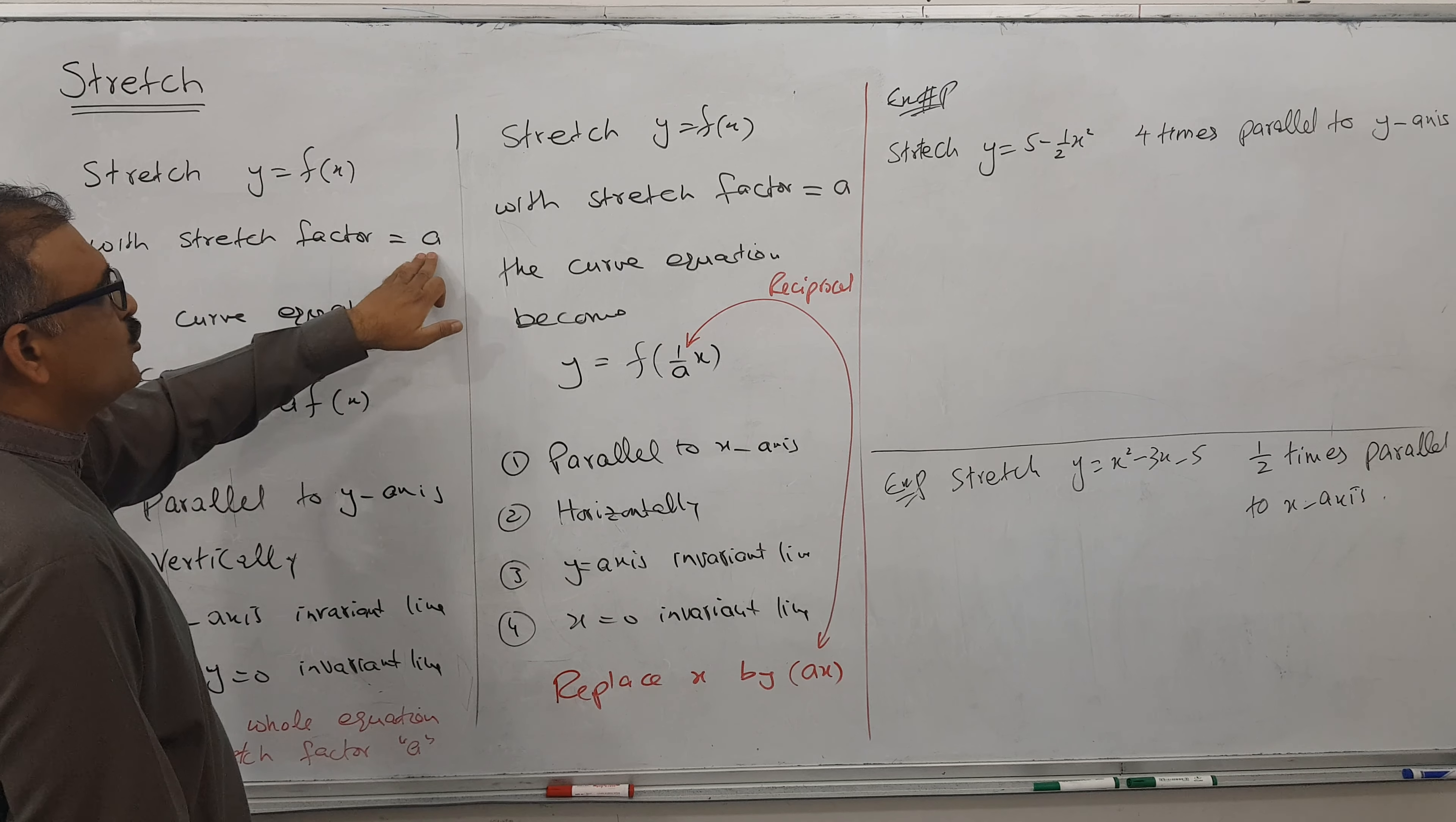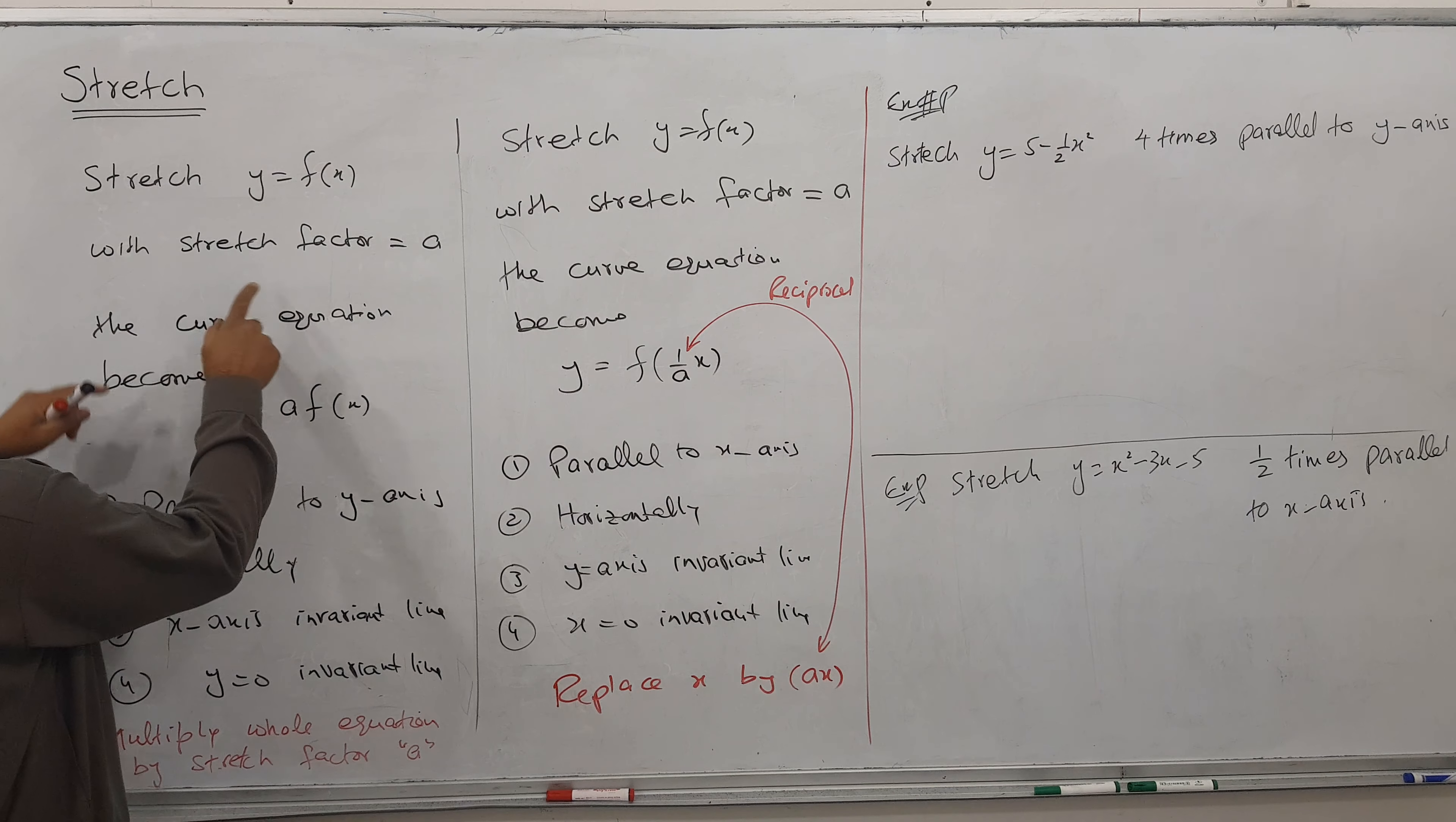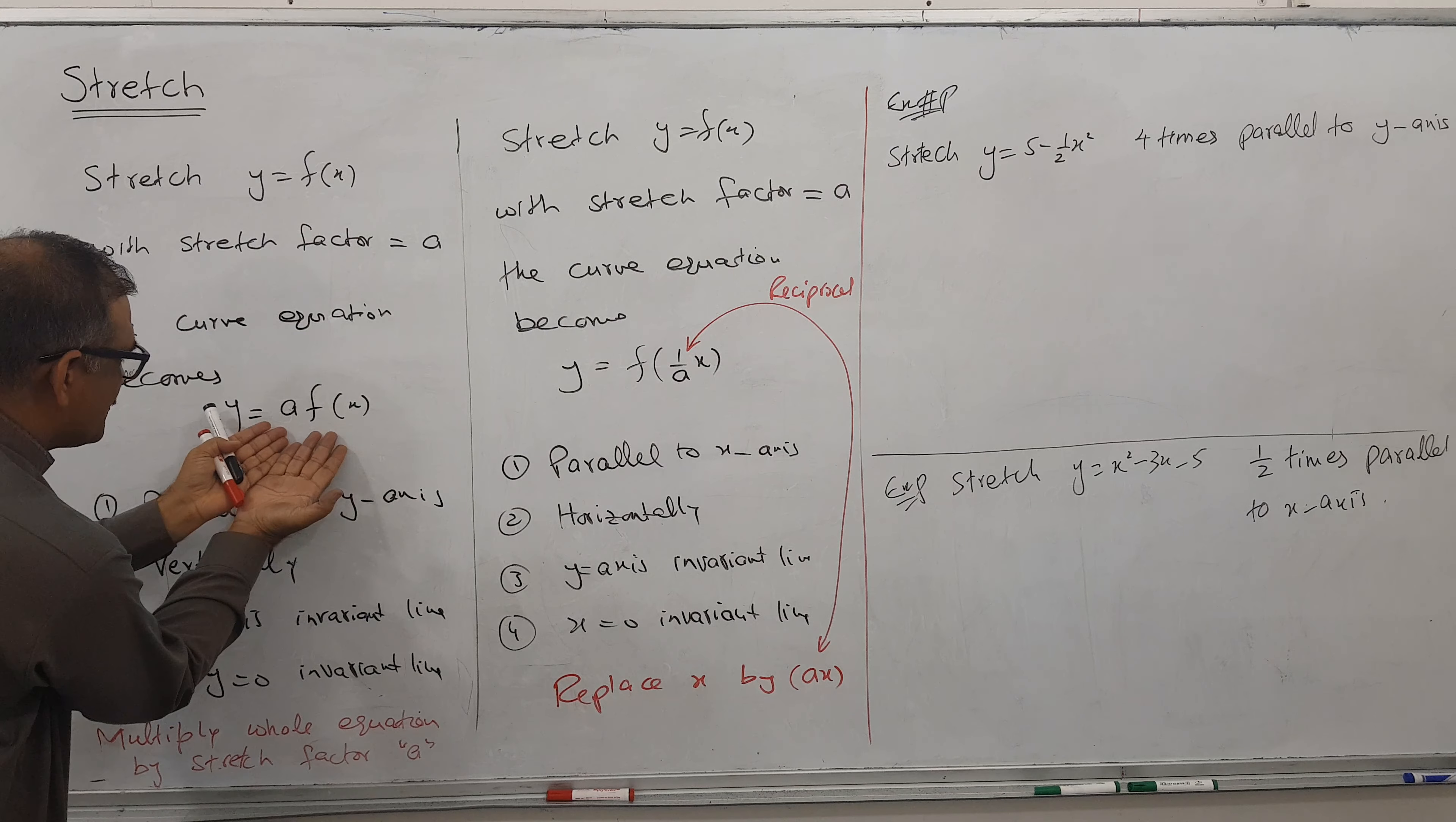A can be any number: 2, 3, 4, 5, 6, whatever. The curve equation becomes - when parallel to y-axis, then this equation becomes this one.